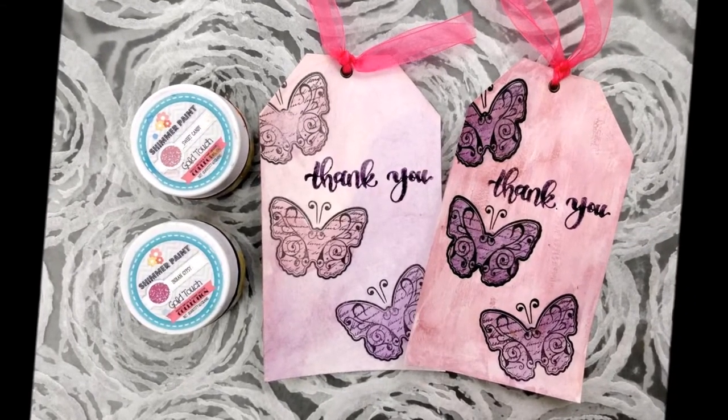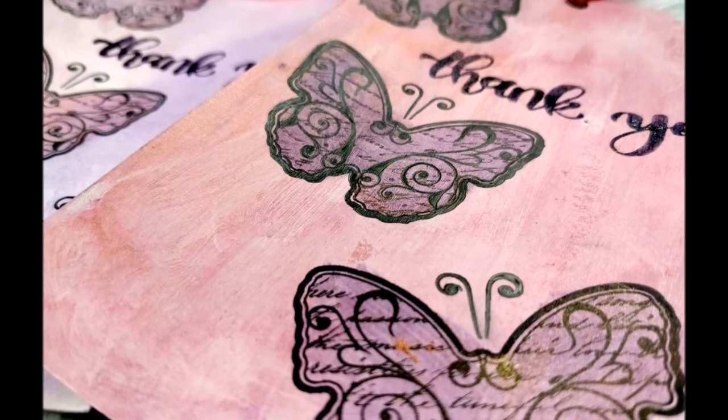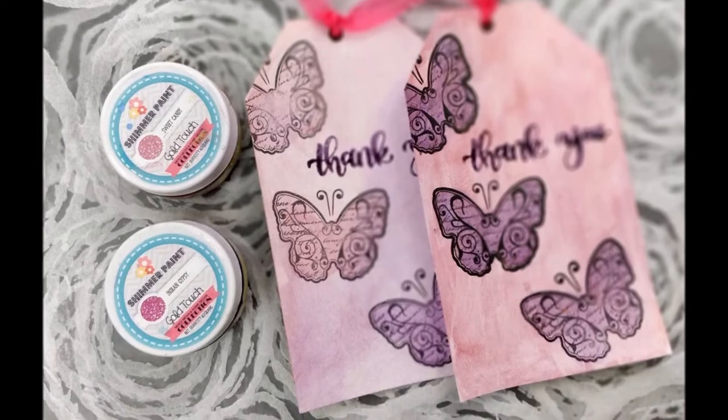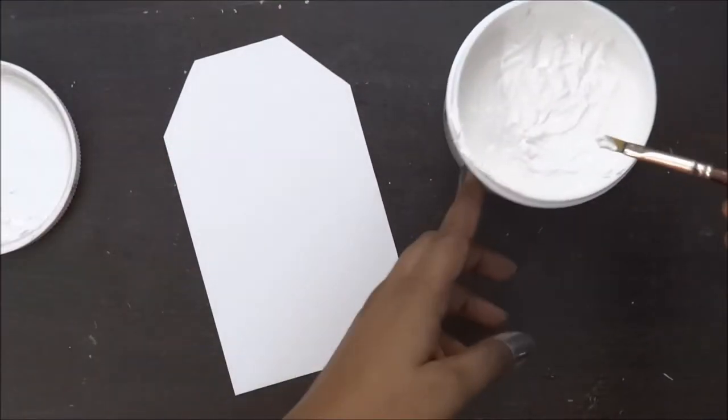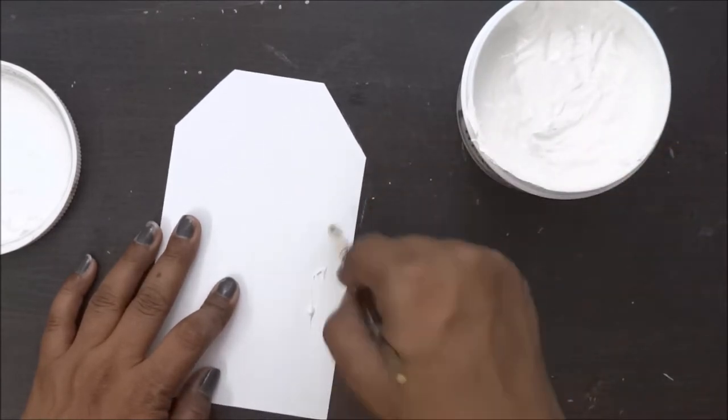Hello friends, it's Sonia here from Growing Craft and I'm back with another tutorial. Today I'll be doing a little experiment to play with gesso and shimmer paints. To start with, I have this 250 GSM thick cardstock where I'm going to apply a thick coat of gesso.